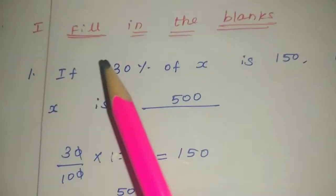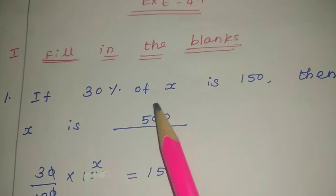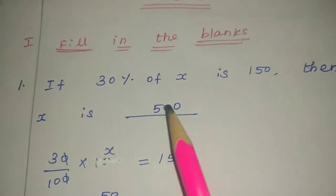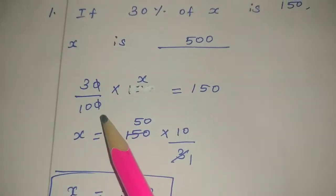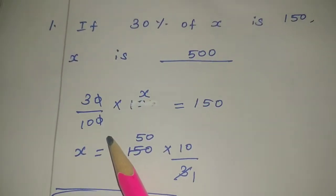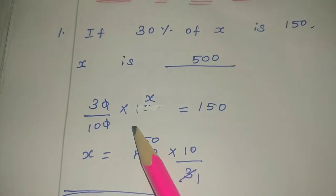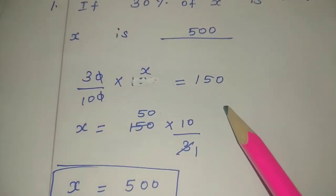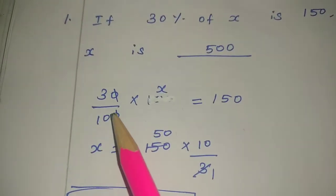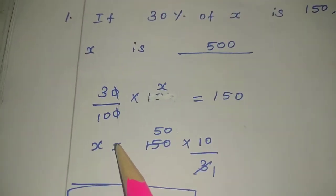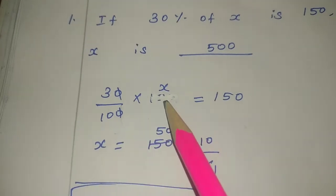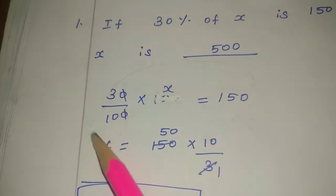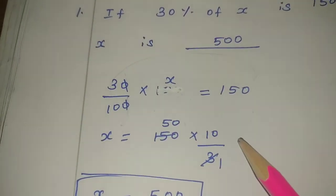Exercise 4.1, first problem — Fill in the blanks. If 30 percentage of x is 150, then x is dash. So, 30 percentage of x equals 150. Percentage divided by 100, and 'of' means multiplication, so: 30 by 100 into x equals 150. Cancel — 3 by 10 into x equals 150. Now transpose: x equals 150 into 10 by 3, using the reciprocal method.